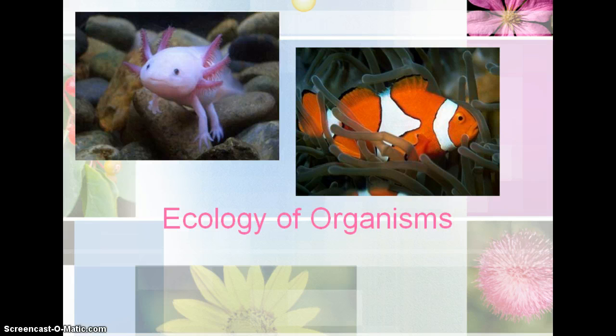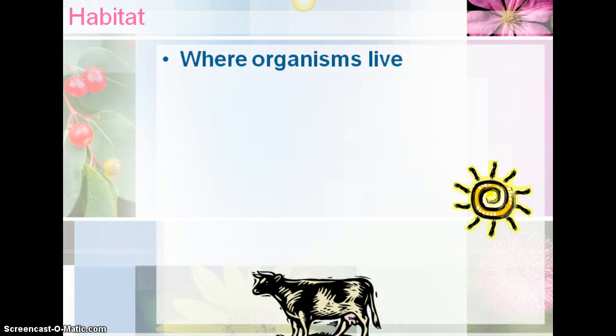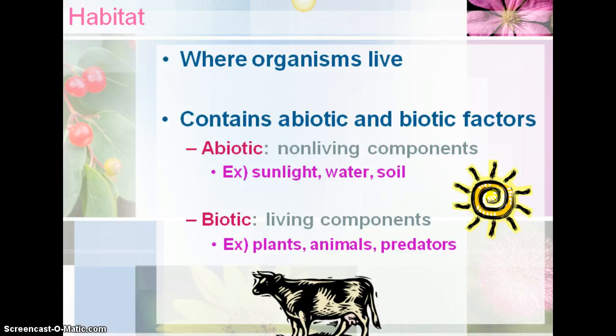We're going to continue into 18.2, which is ecology of organisms, and we have some more terms. To start with, we have habitat — that's where the organism lives. It does have abiotic and biotic factors. Abiotic are non-living components like sunlight, water, and soil. And biotic are living components like plants, animals, and predators.